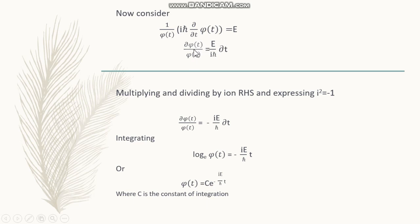Rearranging this equation we can write it as 1 over phi t into d phi of t is equal to E by i h-cross into dt. Otherwise we can say, dividing throughout by i h-cross, we get an i h-cross here.